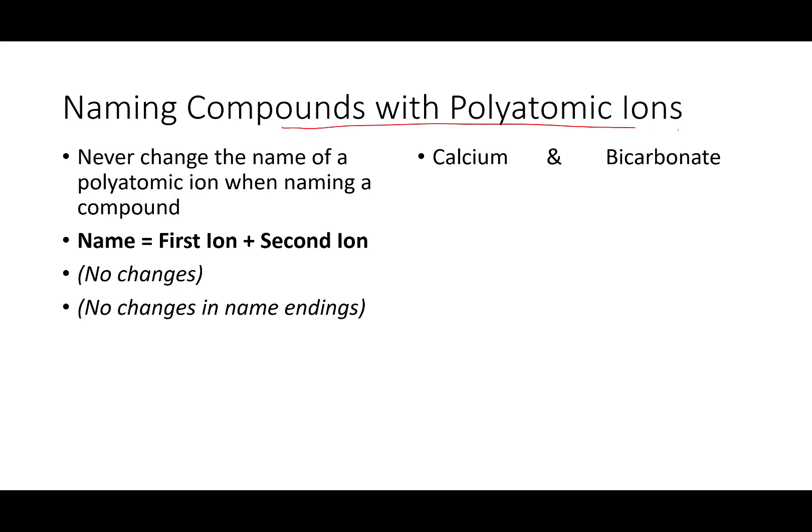Okay, next. Naming compounds with the polyatomics. The naming is really easy. You never, ever, ever change the name of a polyatomic ion when you name the compound. You write down the name of the first ion plus the name of the second ion with no changes, and no changes in ending. So, what's the name of my compound? It is simply calcium bicarbonate. That is not too difficult, because you don't change anything. You just write down its first name and its last name.